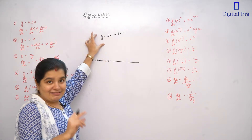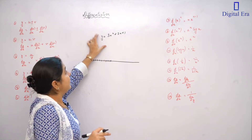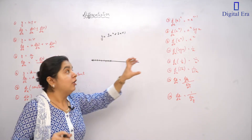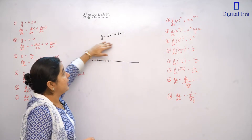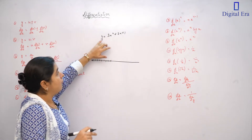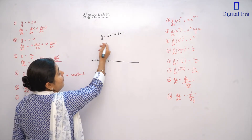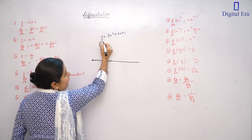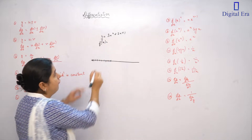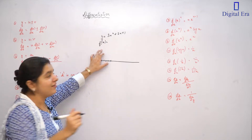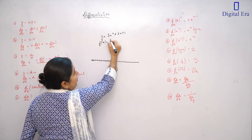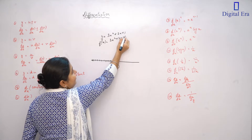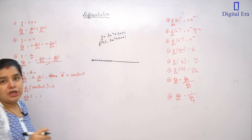y is a function because it is a form of a variable. We will say that a function is y, or we can say f of x, and its value is 3x squared plus 2x plus 1.